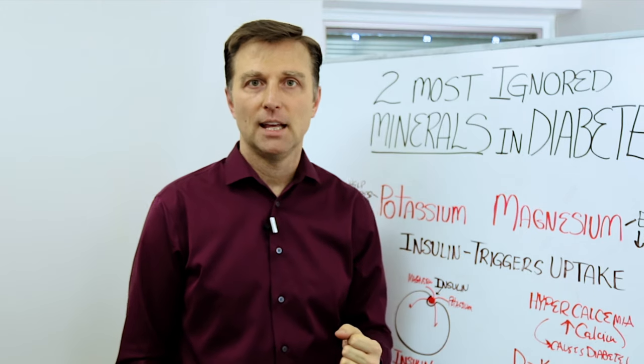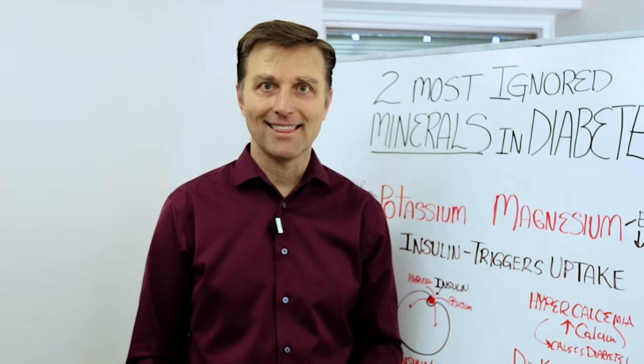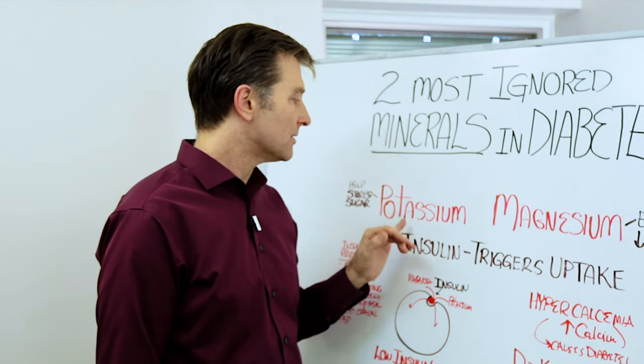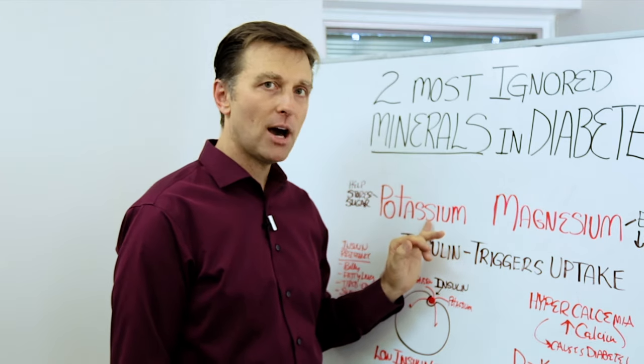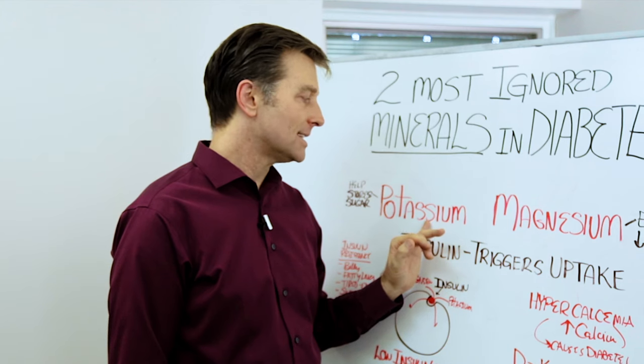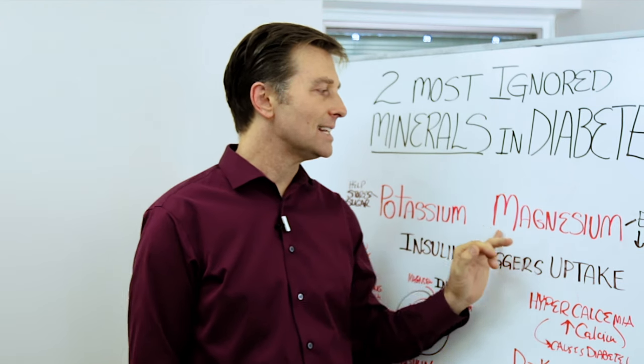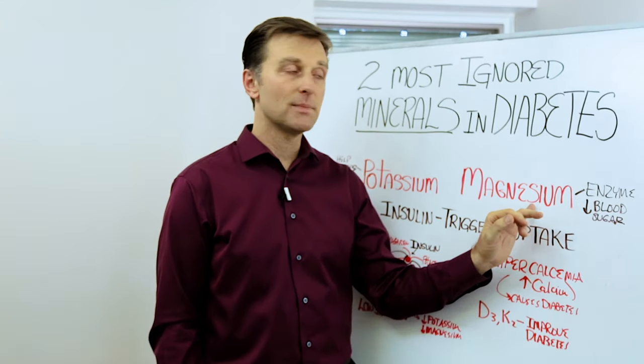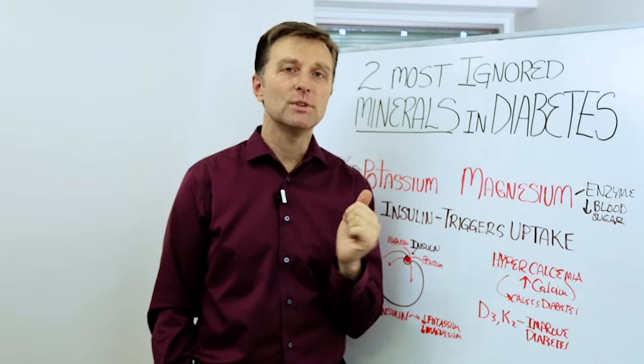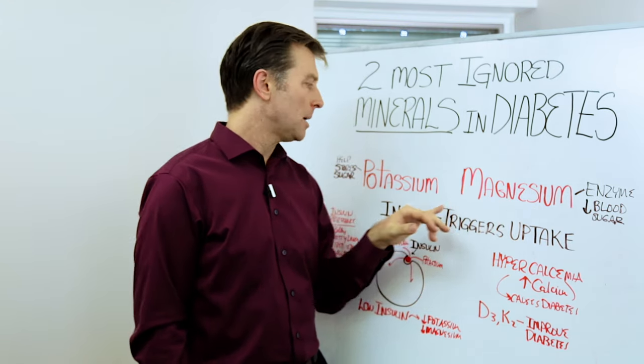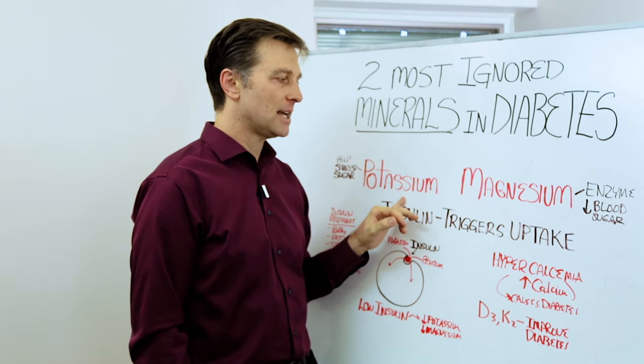You need seven to 10 cups of vegetables every single day. You can do it in a blender. You can do it in a salad. It's not that hard. But it's very important to get that amount because if you're doing seven to 10 cups to get your potassium, you're going to easily get the magnesium because magnesium is in the same vegetables. You don't need as much. You need about 450 milligrams, but you need 4,700 milligrams of potassium.